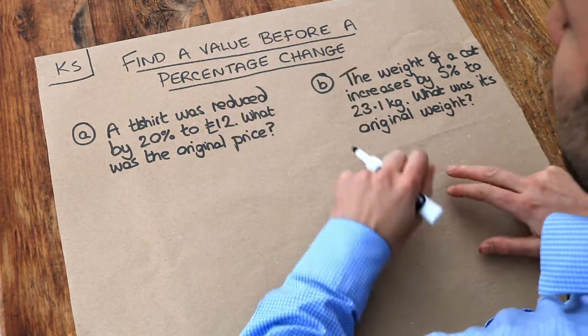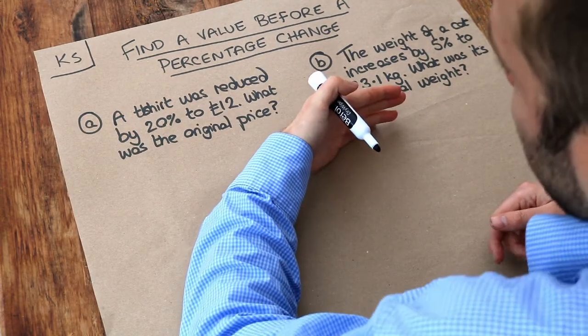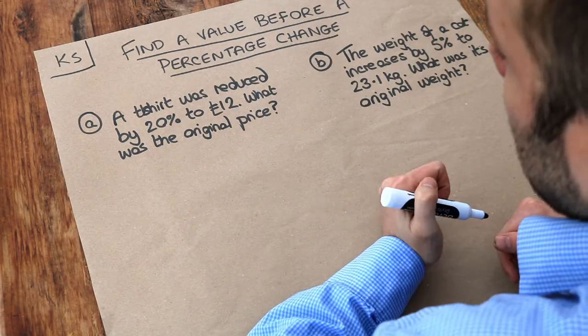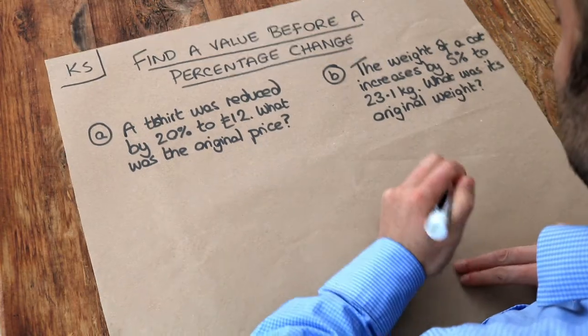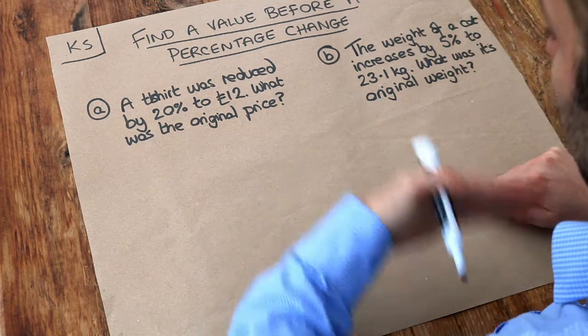Previously the kind of questions we've seen, we have a value that we know, we change it by some percentage like add 20% or minus 20% and then we want to find the new value. But here we want to find that value before the percentage change. So before I reduced a t-shirt by 20%, what was the original value?